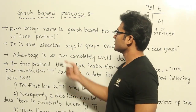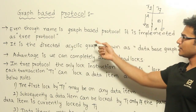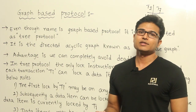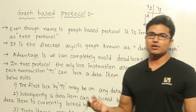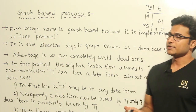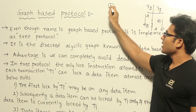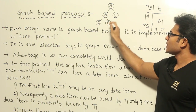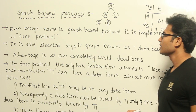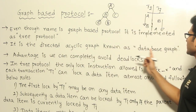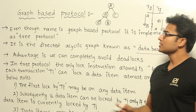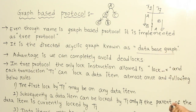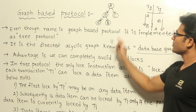Even though it's called a graph-based protocol, it is implemented as a tree protocol. We use a tree because we don't want cycles — cycles are the main reason for deadlocks. The database is arranged like a tree, specifically a directed acyclic graph called the database graph. Directions go top to bottom, with no cycles.